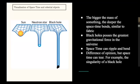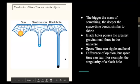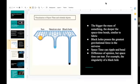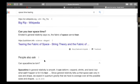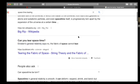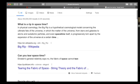The bigger the mass of something, the deeper the space-time bends, similar to the fabric. This is the sun, this is the neutron star, and this is the black hole. As you can see, black holes possess the greatest gravitational force in the universe. Space-time can ripple and bend. However, for it to be tearing, there's a difference of opinion. Some people have said that it can tear, but Einstein's theory says no, it cannot tear. There's a difference of opinion on that matter.